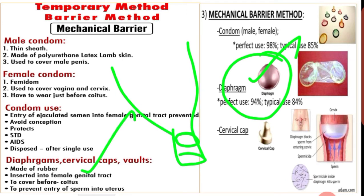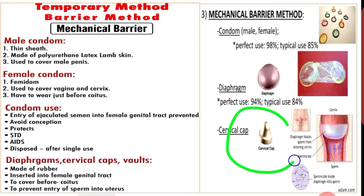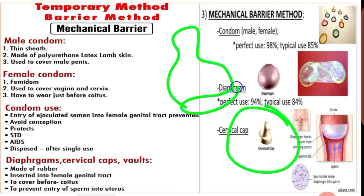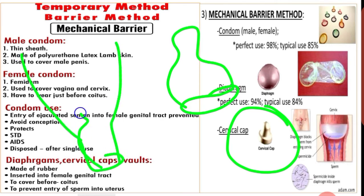Next is the cervical cap. The cervical cap is a rubber nipple-shaped device which is fitted over the cervix. It is designed to remain in place by suction. The device prevents the entry of sperm into the uterus.